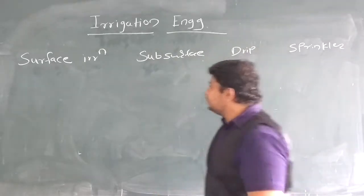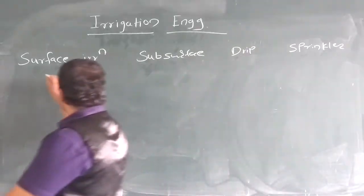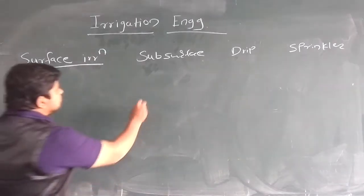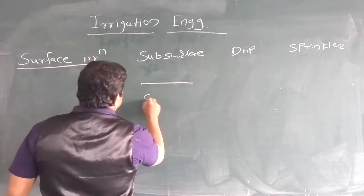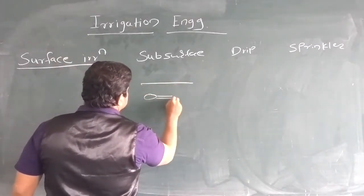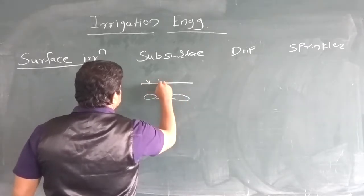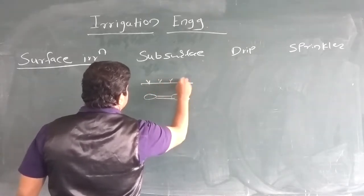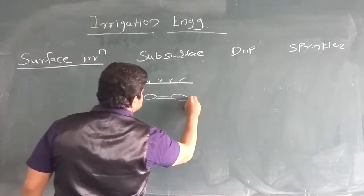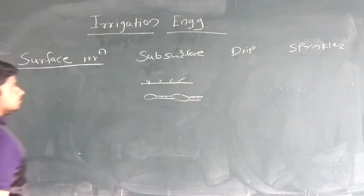In a surface irrigation system, we are going to apply the water directly to the surface. In subsurface irrigation, we are applying the water below the ground using perforated pipes.